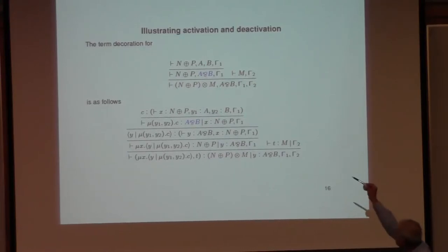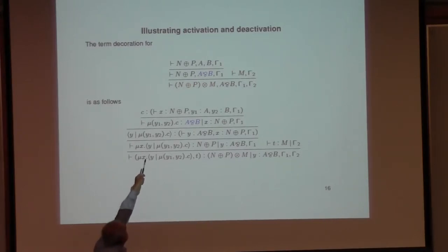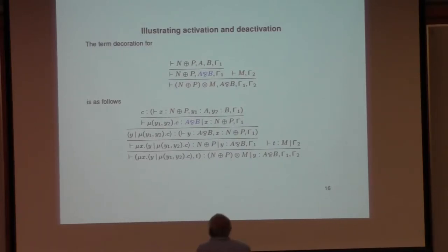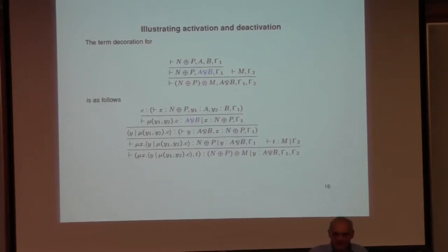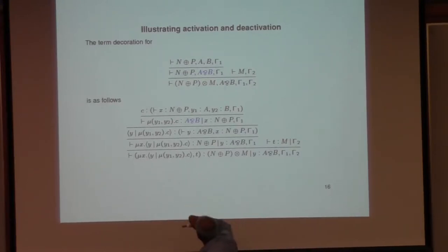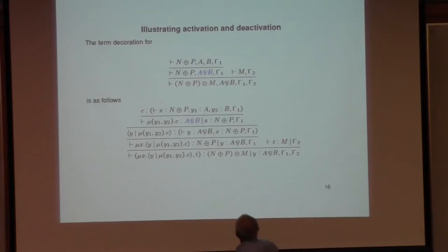In order to account for the first rule, I will suppose that I have a proof of the assumption N plus P, A, B, Γ₁, and this will be a given command C. And now I will use the rule to introduce a par, which is a reversible connective. For reversible connectives, I use binding constructs. So then I get μY₁,Y₂.C, which is a term of A par B, in the context of the other formulas N plus P and Γ₁. And Y₁ and Y₂ were the names associated with the assumptions A and B.